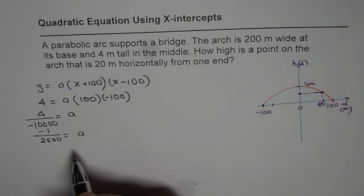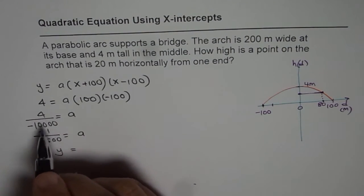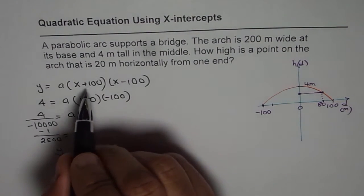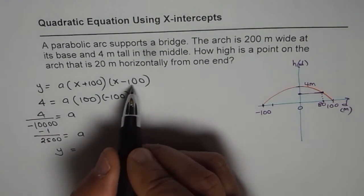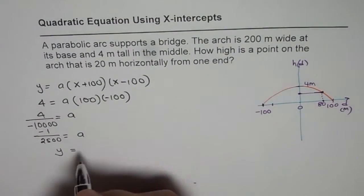Since we know a, we can now write down y equals a times, we could actually simplify this and write x squared minus 100,000 also, but let it be like this. We could have written this as, well, let's write this as 1 over 2500.